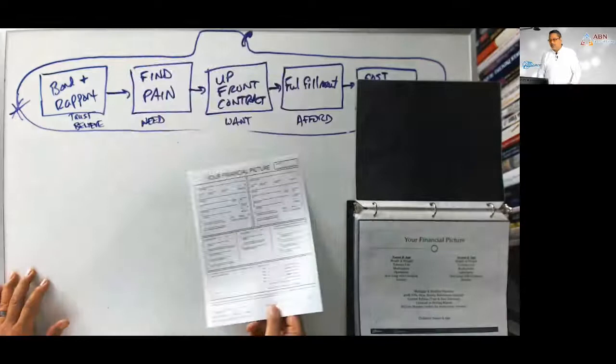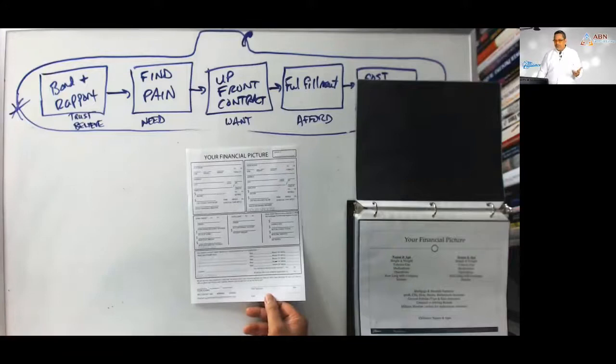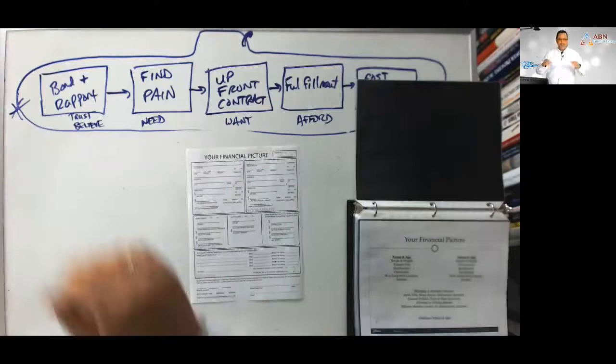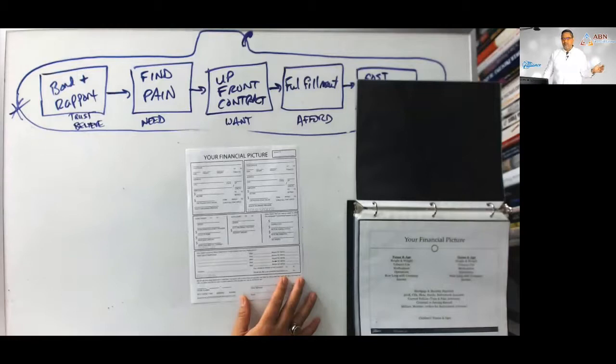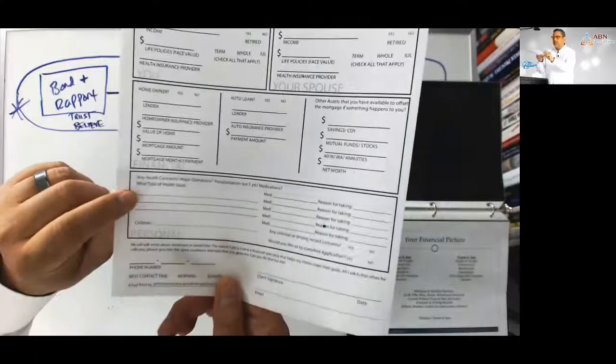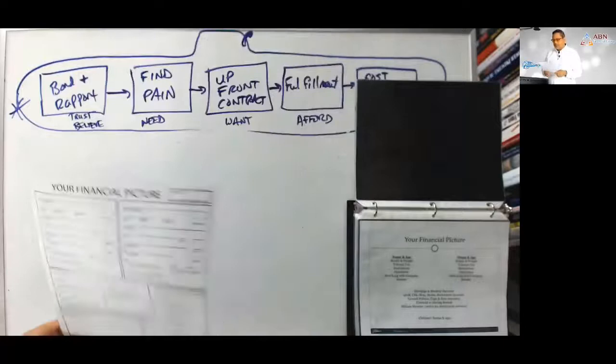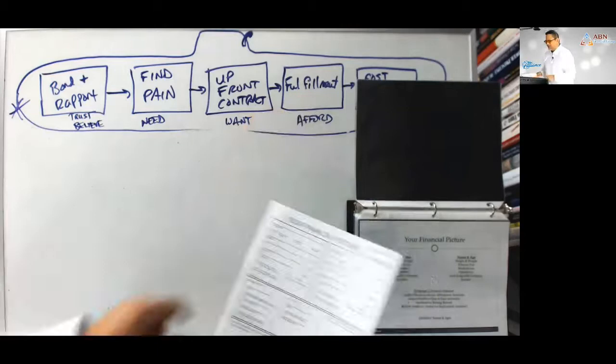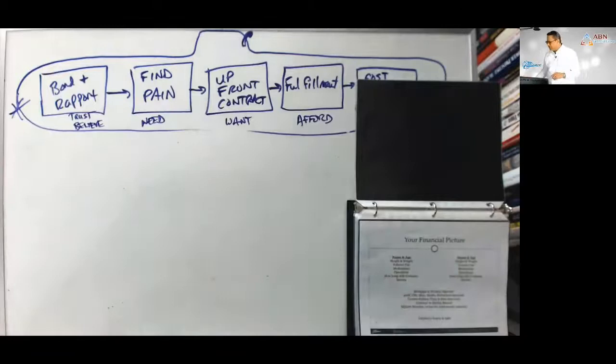So people freak out about the net worth. And I always just ask it, just round numbers, Joe and Mary. Do you know what your net worth is? They say, oh, man, I have no idea. Okay, well, just estimate it because the insurance companies usually ask this question on the application. So just round numbers. If you took everything that you own and sold it at fair market value, and then you paid off all your debts, what do you think you'd have left over? And that would be your net worth. $100,000, $50,000, doesn't. The insurance company wants to know. And then you get that filled out. Then you put in the medications and any health concerns, medications, the reason for taking the medications. And then this is the sheet that you're going to develop the options, the three options in the fulfillment step. So you get that financial picture thing done.